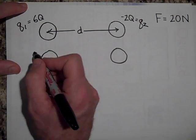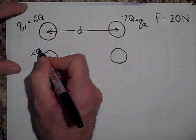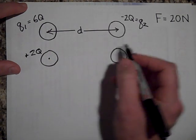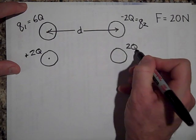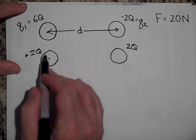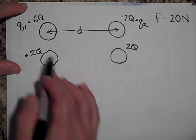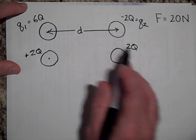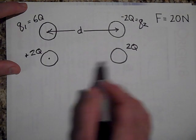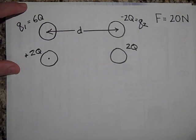So this will be 2Q positive and this will be 2Q. So see how it still has a net charge of 4Q total? This had a net charge of 4Q and this does 2. Could you tell me what the new force will be if the old force was 20 Newtons?